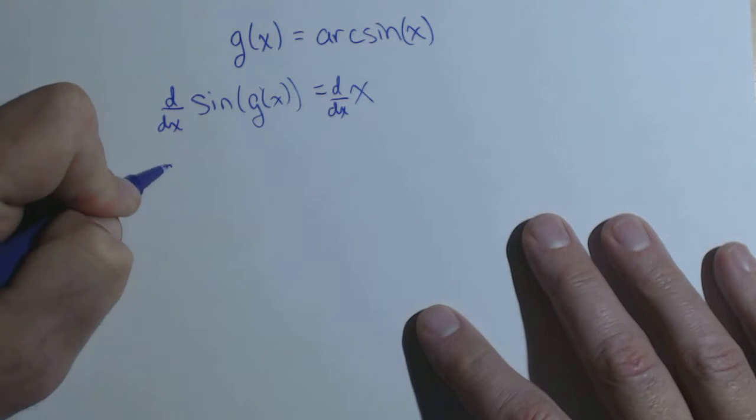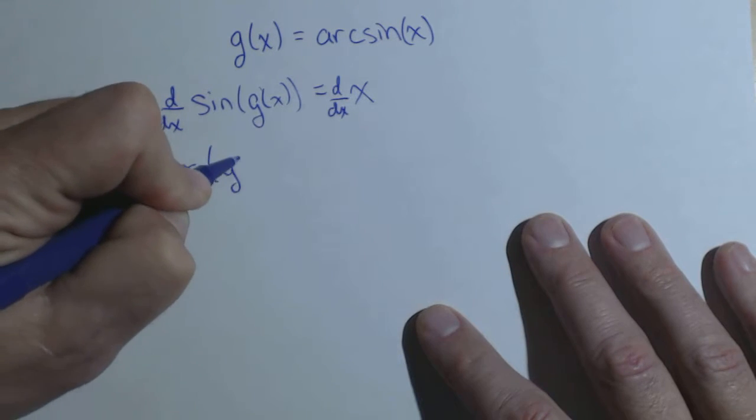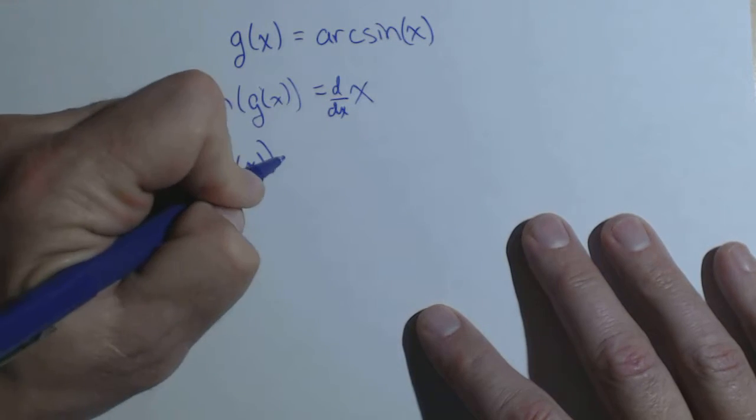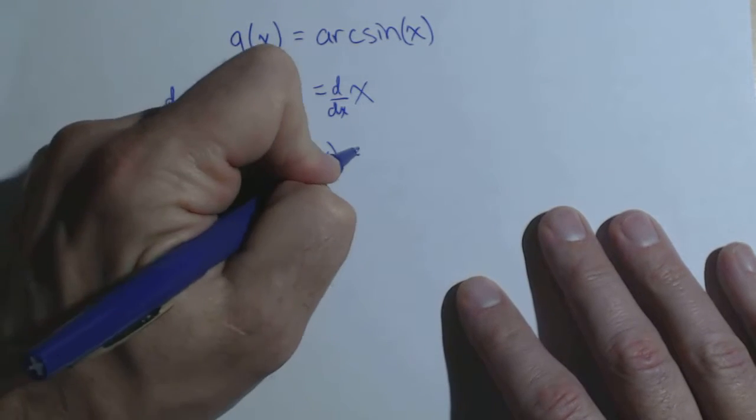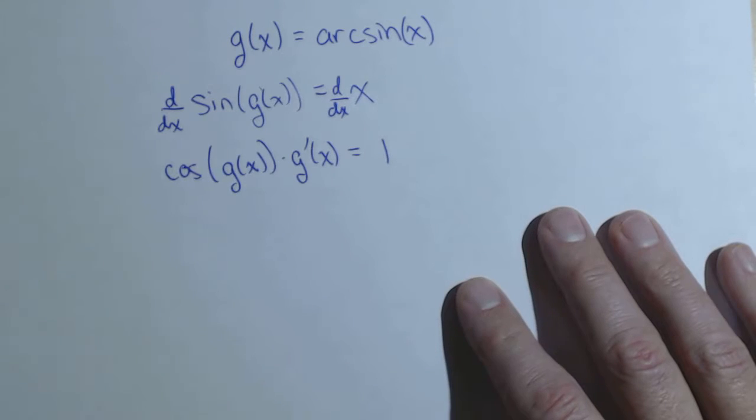Now the derivative of sine is cosine. I leave the inside alone times the derivative of the inside, which is g prime of x. The derivative of x is just one.